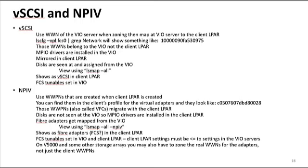With vSCSI, we're going to use the WWN for the VIO server — the one that starts with a 10. If you do an lsattr -El fcs0 and grep network, you'll see something that looks like the number I have there. Those belong to the VIO. Anything that is zoned and mapped to that can only be seen by the VIO. It can then pass it through using mappings with vSCSI. All the MPIO drivers get installed in the VIO server, and you still mirror everything in the client LPAR. Any fiber adapter tunables will be set in the VIO.